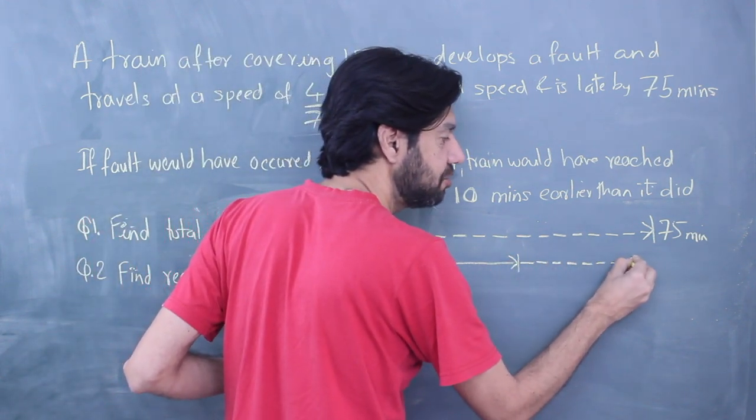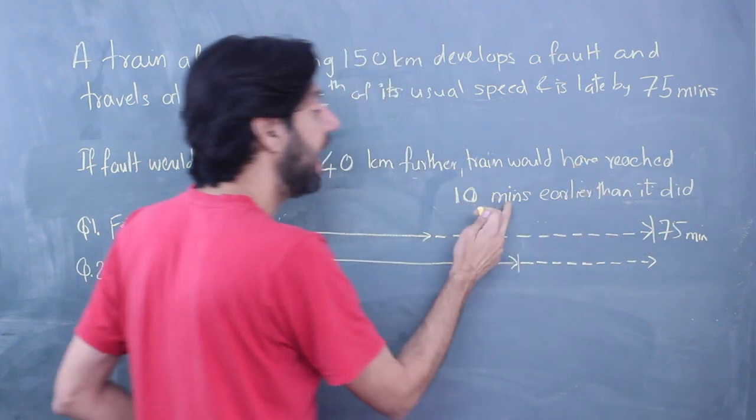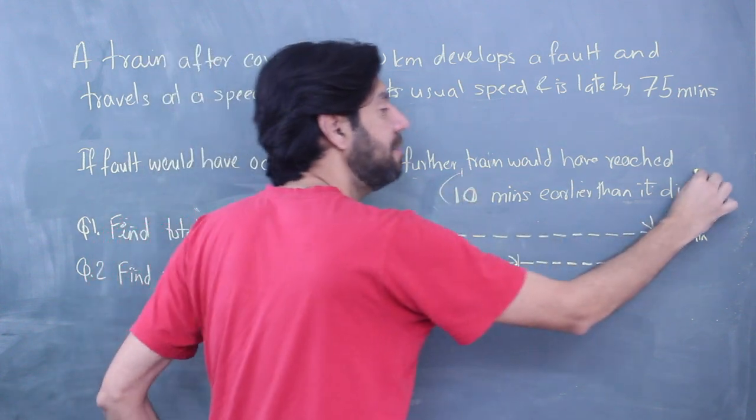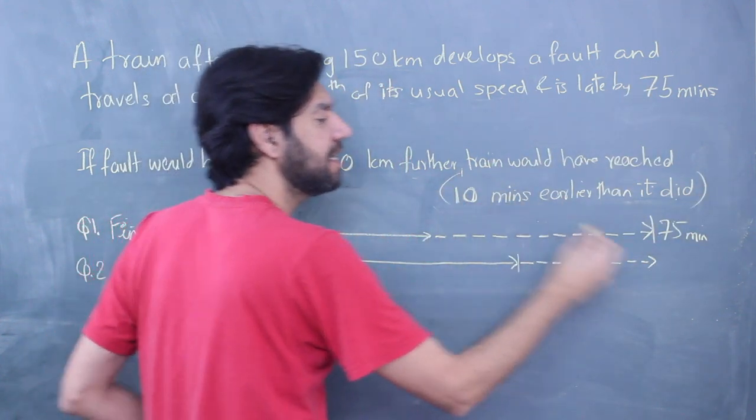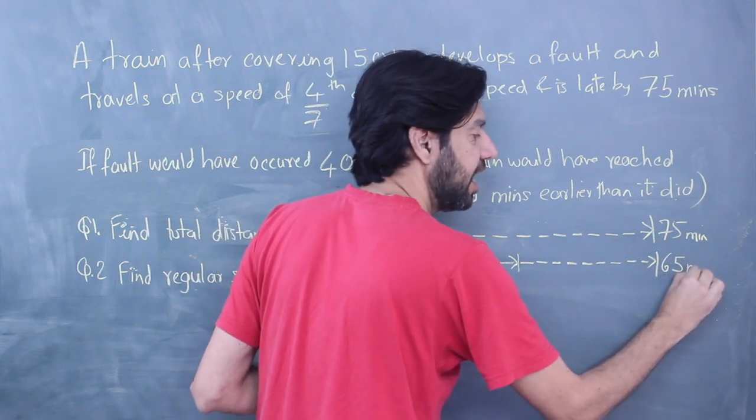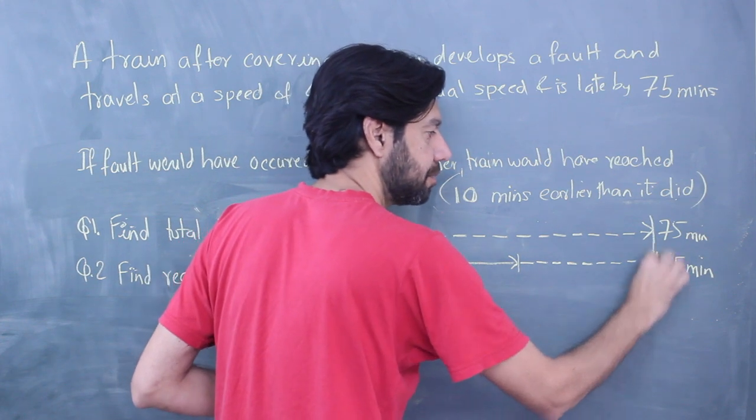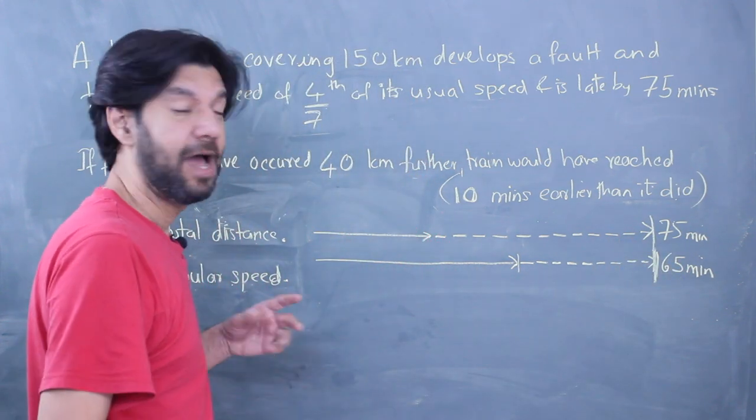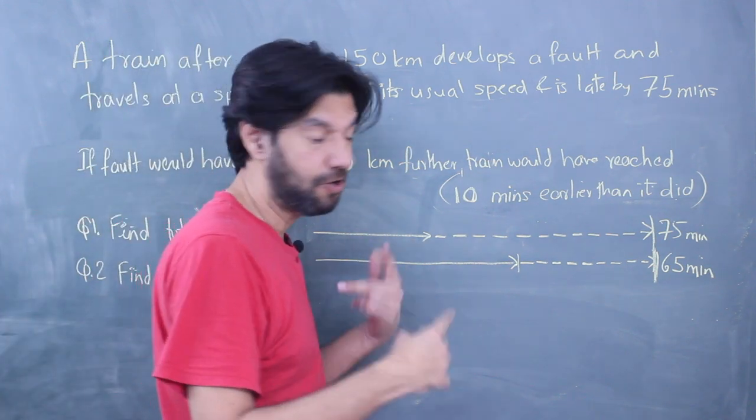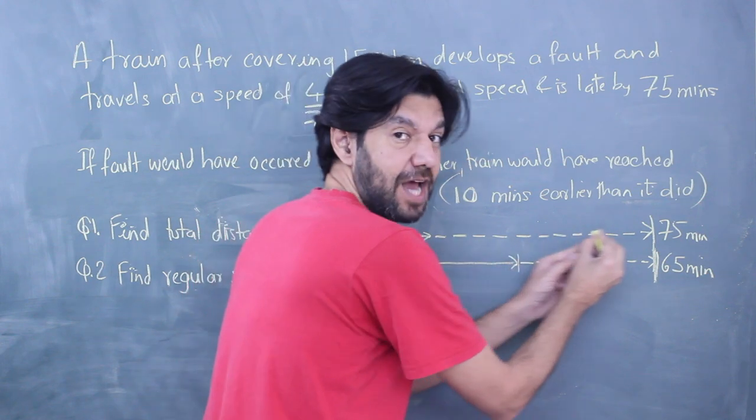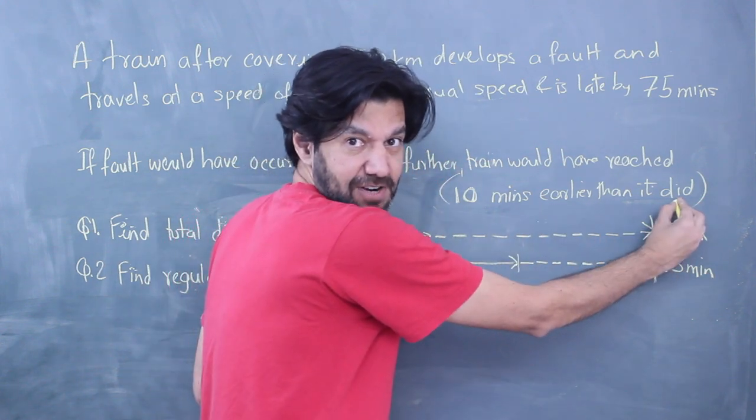Here I am going to travel at the reduced speed for a shorter distance compared to earlier, and hence I reach 10 minutes earlier. This 10 minutes earlier simply means it is going to be 65 minutes late instead of 75 minutes late. If you follow the intuition: more distance at reduced speed means more late, lesser distance at reduced speed means less late.